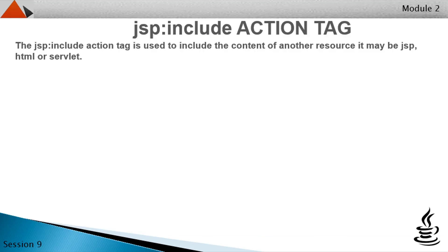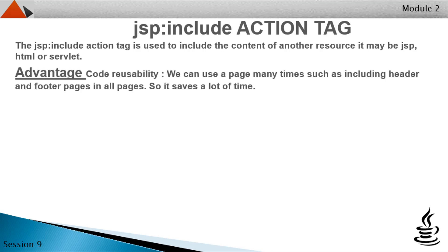Now let's see the JSP include action tag. The JSP include action tag is used to include the content of another resource — it may be JSP, HTML, or a Servlet. The JSP include action tag includes the resource at request time, so it is better for dynamic pages because there might be changes in future. It can include static as well as dynamic pages. An advantage is code reusability: we can use a page many times, such as including header and footer pages in all pages, which saves a lot of time.